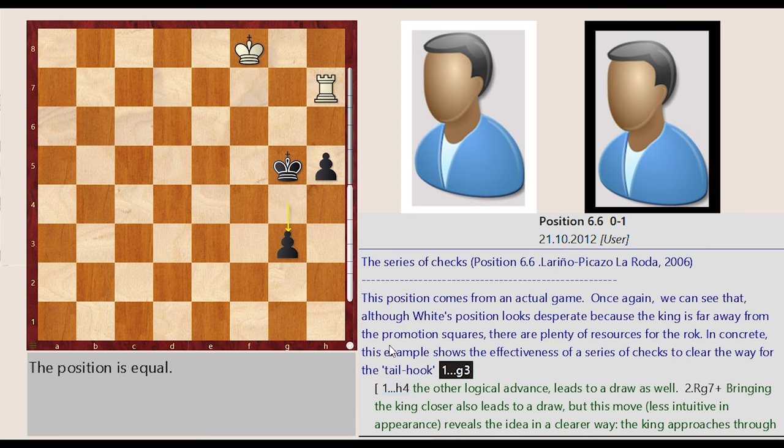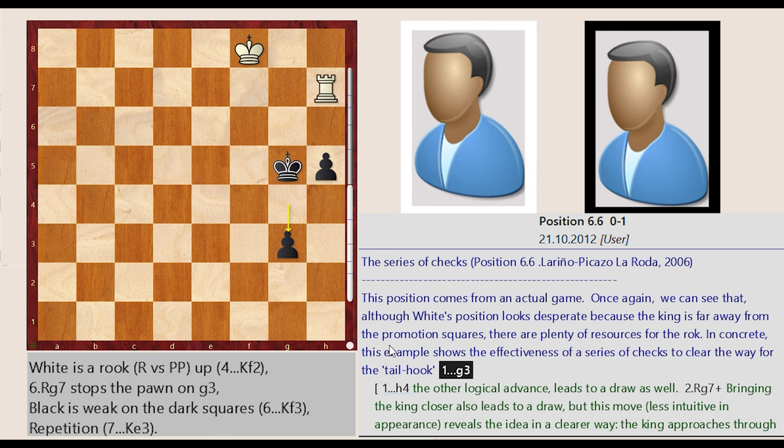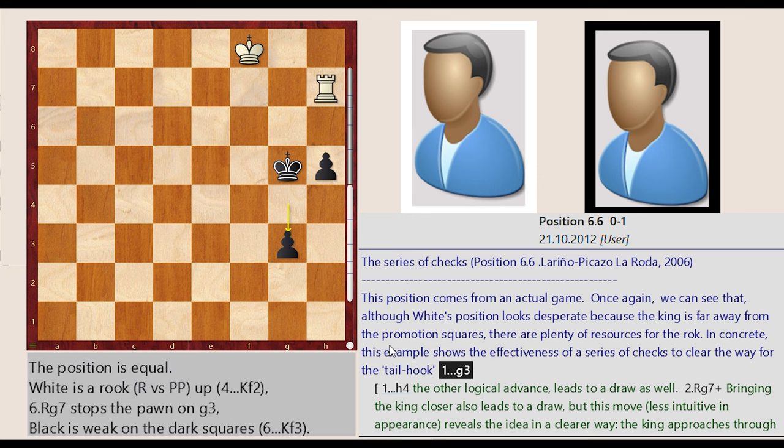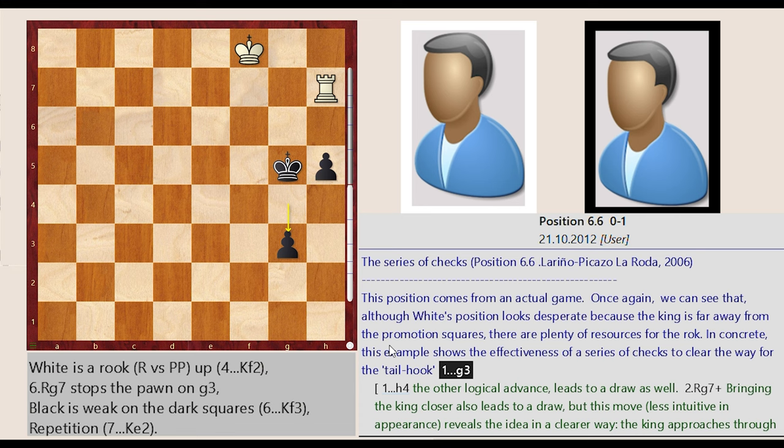The series of checks, position 6.6, Lerino-Picasso-La Rota 2006. This position comes from an actual game. Once again, we can see that, although white's position looks desperate because the king is far away from the promotion squares, there are plenty of resources for the rook. In concrete, this example shows the effectiveness of a series of checks to clear the way for the tail hook.